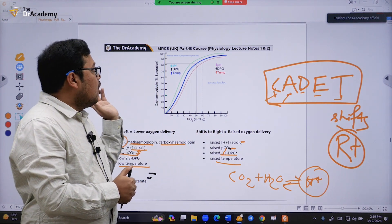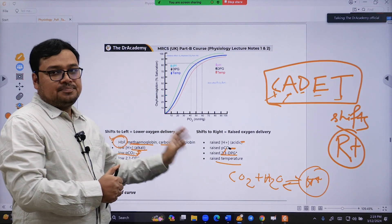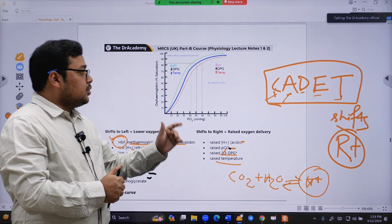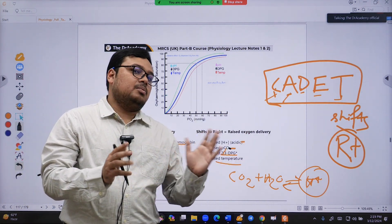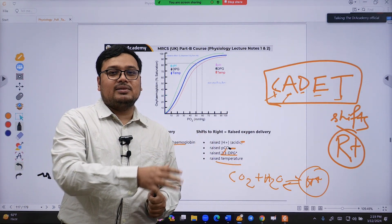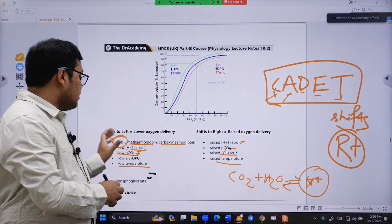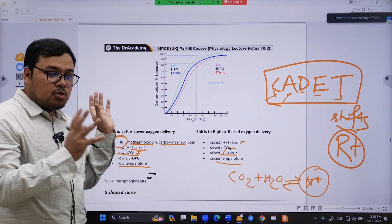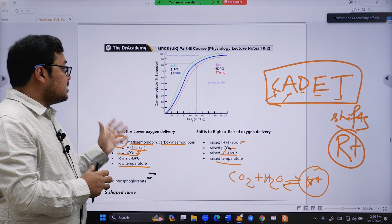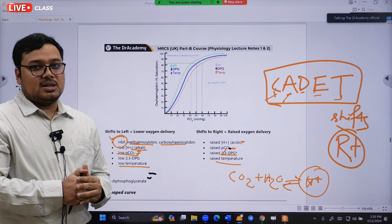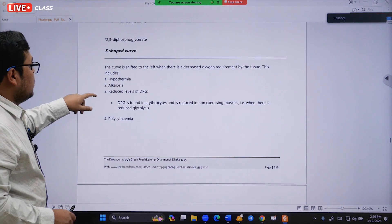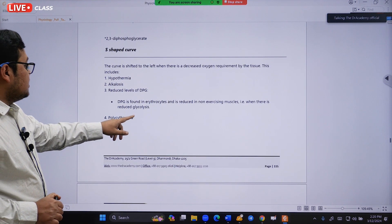The answer would be shifting to the left side. Though the mnemonic CADET is for the right side, from my experience solving recall questions, we have to emphasize more on the causes of left shift of the oxygen dissociation curve.